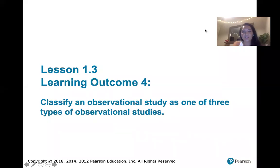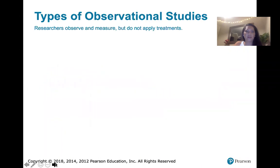In this video we discuss learning outcome number four, which is all about different types of observational studies. Observational studies are studies in which researchers are observing and measuring variables, but they're not applying treatments to everyone.